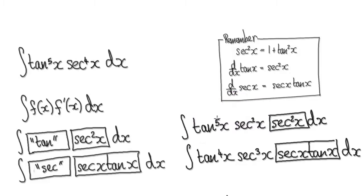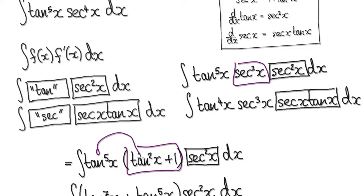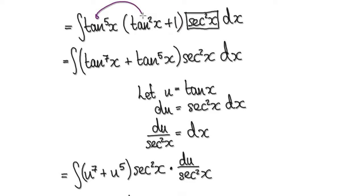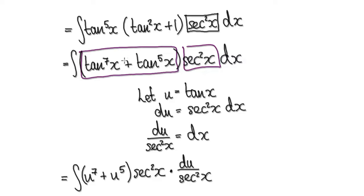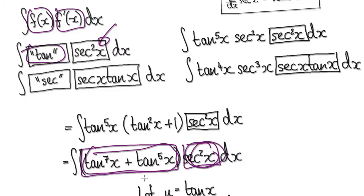So replace this block with 1 plus tan squared x. This times this will give you to the power of 7, this times this will give you to the power of 5, and then you've got this block remaining the same. We always strive for something to be the exact derivative of another thing. This thing here is the exact derivative of everything in terms of tan, so you know it's going to be easy to integrate.